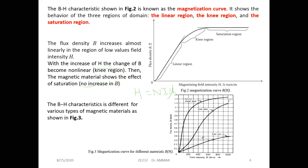The B-H characteristics of different materials are shown because they don't all have the same behavior. For example, we have silicon sheet steel, cast steel, and cast iron plotted with H values on one axis and B values on the other. The magnetizing curve is different from material to material.